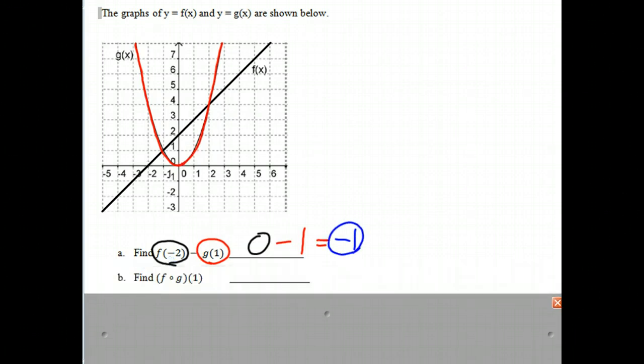In our second example, we're going to find f circle g of 1. And we might remember that f circle g of 1 really means f(g(1)).